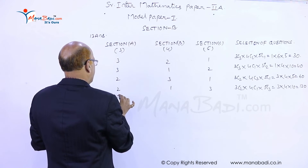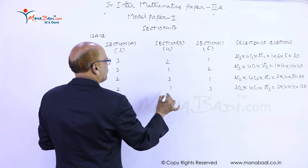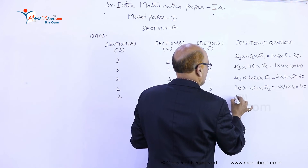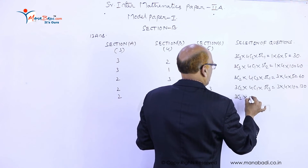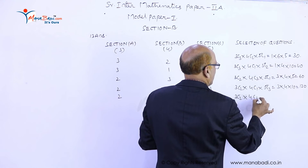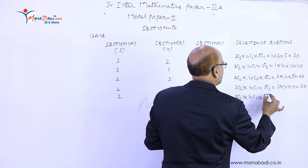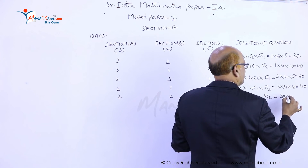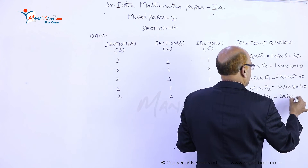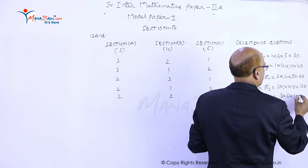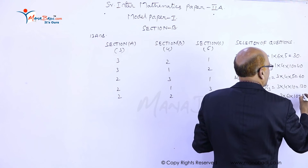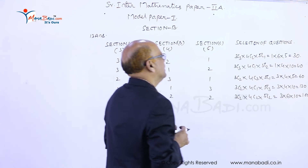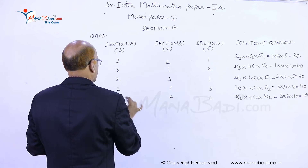That completes four selections. Fifth: I'll take two questions from each section. That will be 3C2 into 4C2 into 5C2. 3C2 is 3, 4C2 is 6, and 5C2 is 10, giving 60 into 3 equals 180.